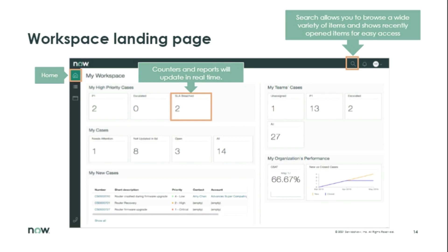The landing page is tailored for each group's needs — CSM agents, HR agents — with different experiences based on that agent's work type. From the landing page you'll see counters that update in real time when cases change state or there's new work. Clicking those counters reveals a list of applicable records, and from there you can click into each individual record. The beauty of workspace is you don't find yourself transitioning out into a form view — it's all within that agent workspace experience.